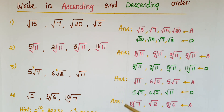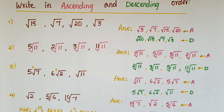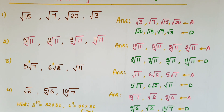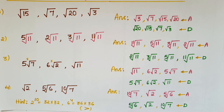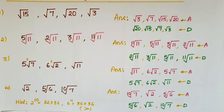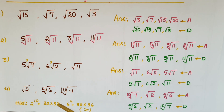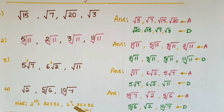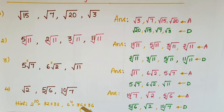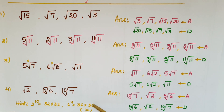Now write these root numbers into ascending and descending order — these are the answers. Here I have given a hint: 2 to the power of 10 — we can calculate 2 to the power of 5 is 32, so 32 times 32; and 6 to the power of 4 is 36 times 36. So no need to multiply all the way out — you can check directly which number is greater.